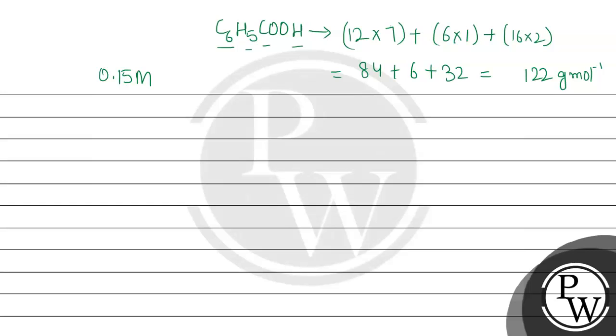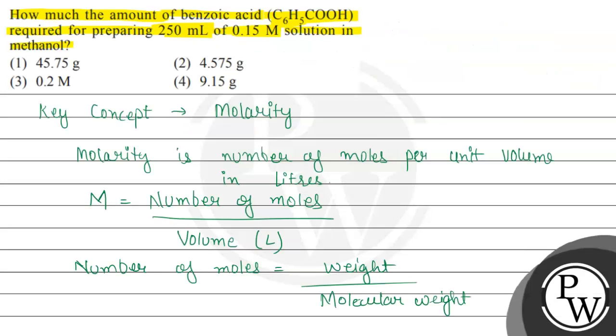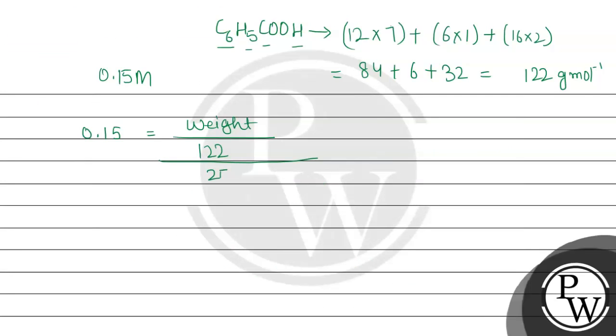Now we will use the formula which says molarity, which we have given as 0.15, equals the number of moles. And number of moles is weight, which we have to find, divided by the molecular mass which is 122, and this is further divided by volume in litre. The volume given is 250 ml, so when we convert 250 ml to litre, that will be divided by 1000.